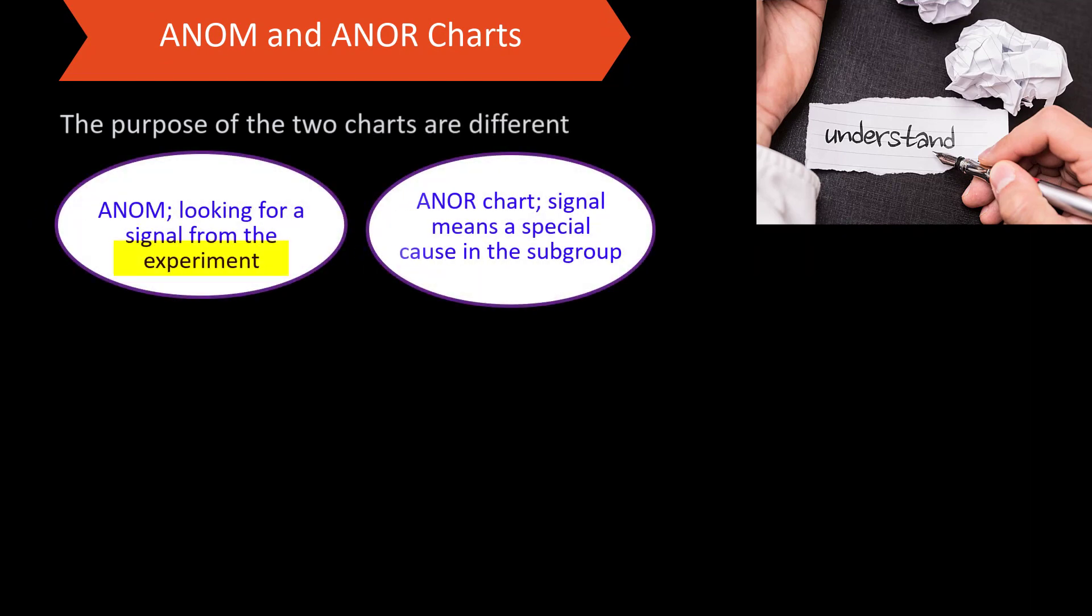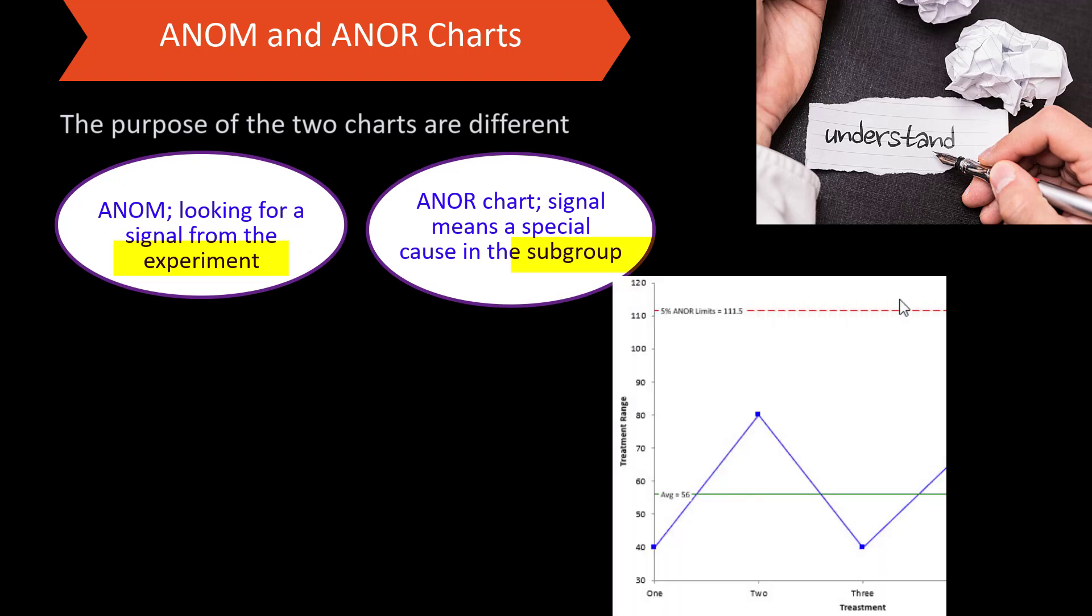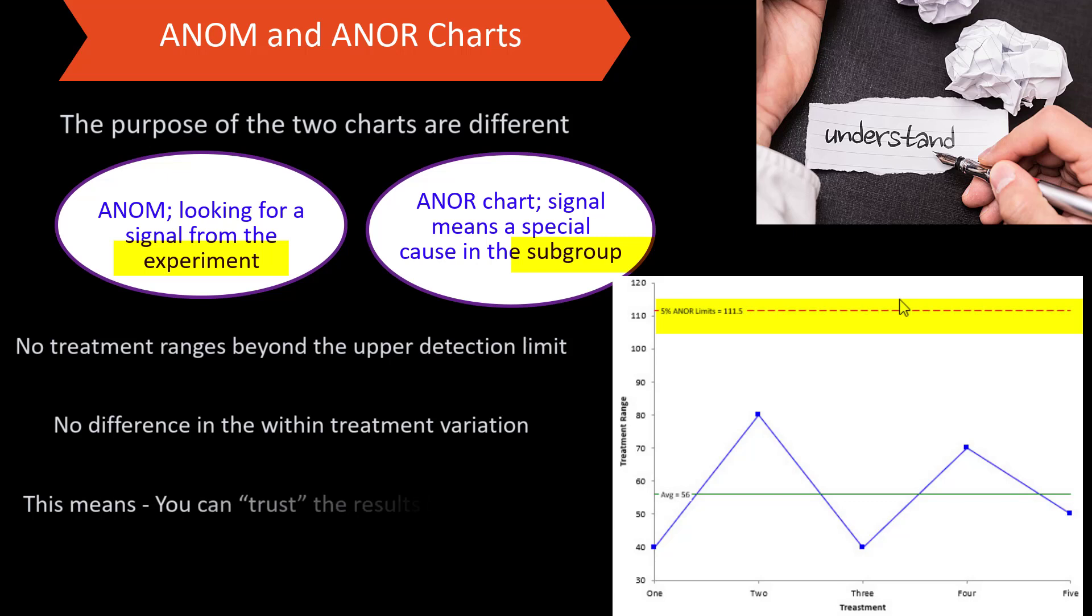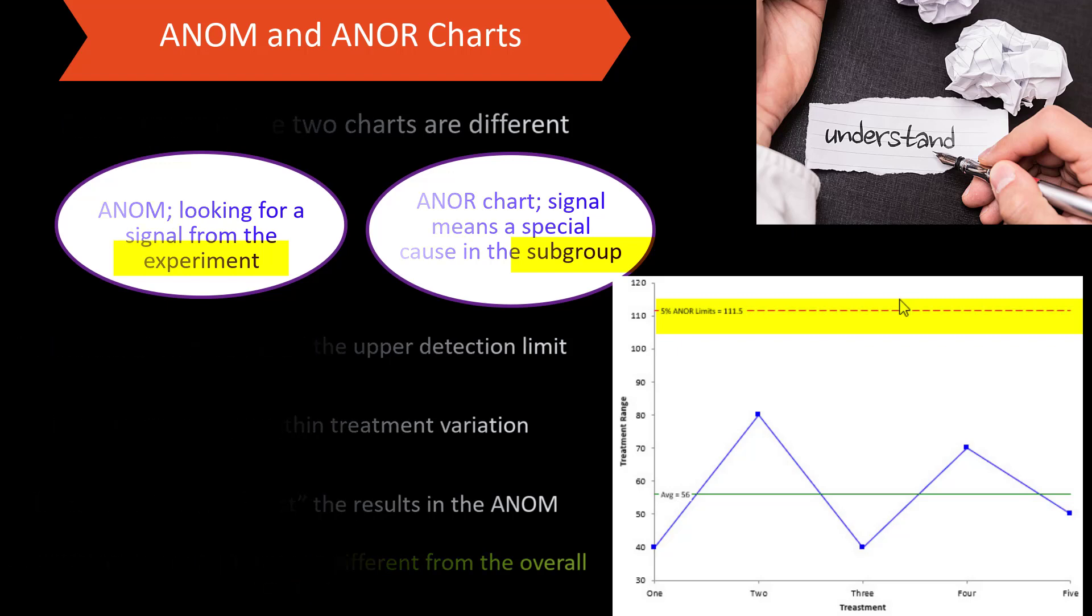This brings out the differences in the two charts. With the analysis of means, we're looking for a signal from the experiment. But with the analysis of range, we're trying to see, are there any special causes in the subgroup? If you have an out-of-control point on the analysis of range, you've got a problem and you need to redo it. There are no treatment ranges, in this case, beyond the upper detection limit. That means you can trust the results. There are definitely three treatment averages that are different from the overall average on the analysis of means chart.